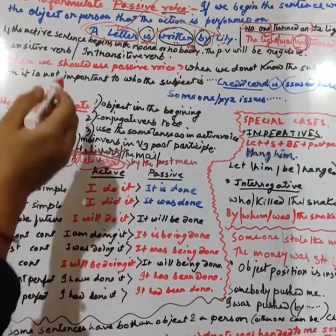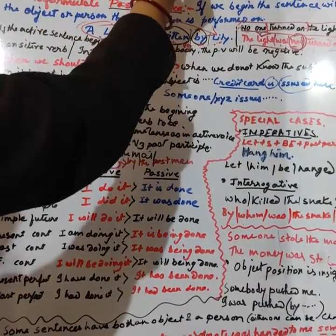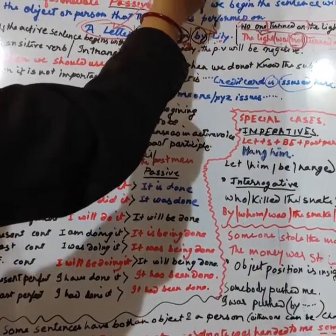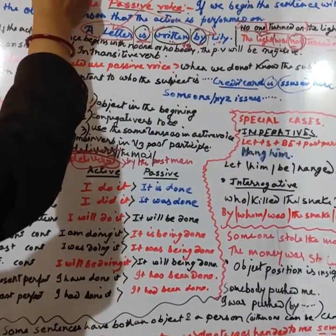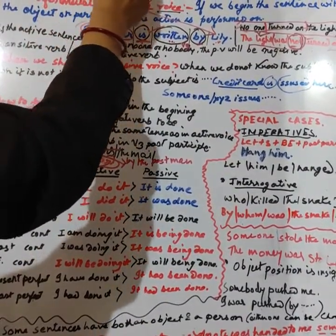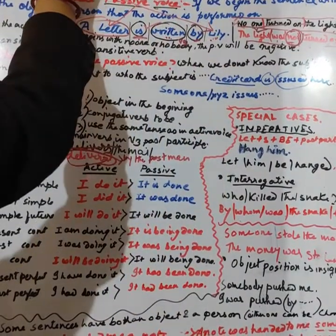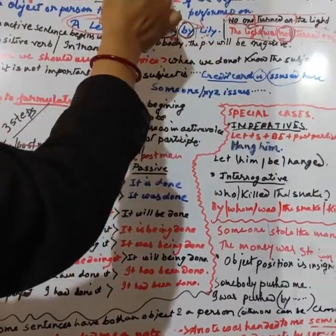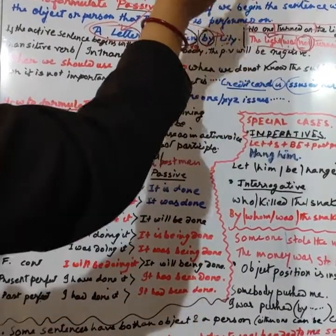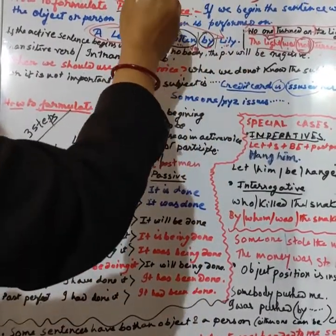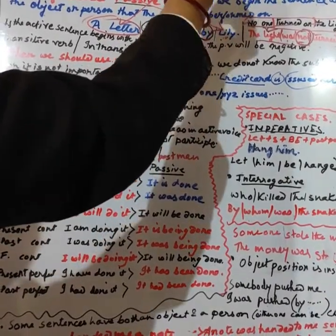Now what is passive voice? The definition is: when the verb speaks of its subject as being acted upon, or something having done to it. That means the subject is not the doer.